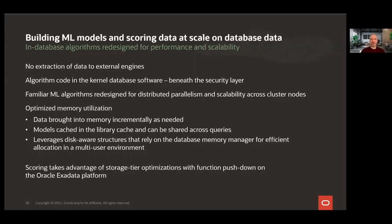Let's continue with building machine learning models and scoring data at scale. This is where you want to leverage familiar algorithms designed or redesigned for performance and scalability that require no movement of data to other engines. Algorithm code is in the kernel database software beneath the security layer, and has been redesigned for distributed parallelism and scalability across cluster nodes, along with optimized memory utilization. Data is brought into memory incrementally as needed, model objects are cached to be shared across queries, and even rely on the database memory manager for efficient allocation in a multi-user environment. For Exadata, scoring can take advantage of storage tier optimizations, and all of this is available from an R interface.